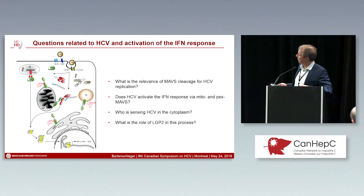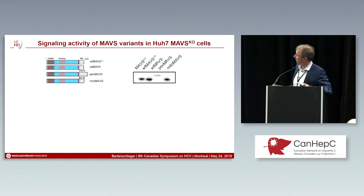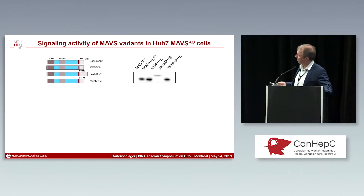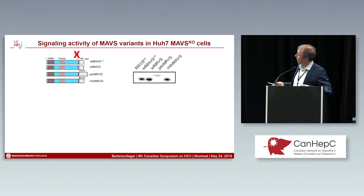The questions we were interested in were: what is the relevance of this MAVS cleavage for HCV replication, and does it actually control MAVS no matter where it's located subcellularly? To address this, we generated cell lines which are highly susceptible to HCV infection and knocked out the MAVS gene, making them unable to mount an interferon response. We then put the MAVS gene back either as normal wild-type MAVS, as MAVS exclusively expressed at peroxisomes or at mitochondria, or as a MAVS gene where the cleavage site for the protease has been inactivated — so the virus can no longer cleave MAVS in those cells.